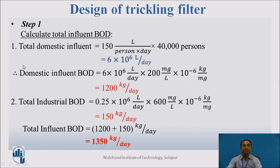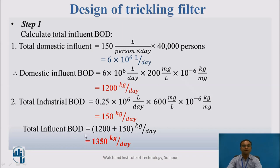The total BOD from domestic influent is 1,200 kg/day. For industrial BOD: 0.25 × 10⁶ liters/day × 600 mg/L × 10⁻⁶ kg/mg = 150 kg/day. Therefore, the total influent BOD is 1,200 + 150 = 1,350 kg per day.